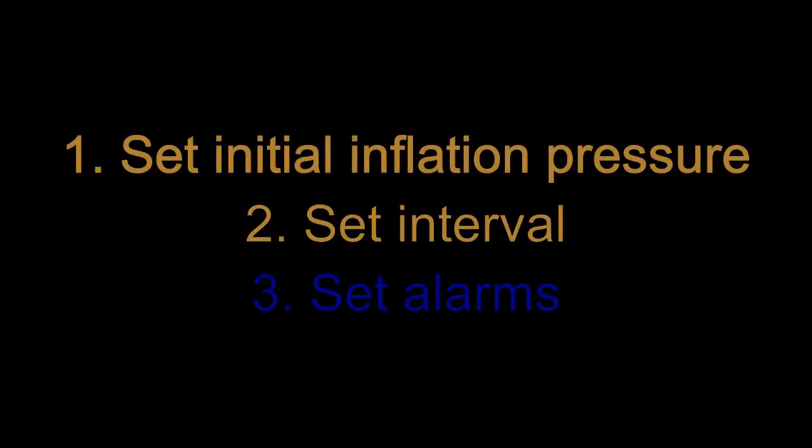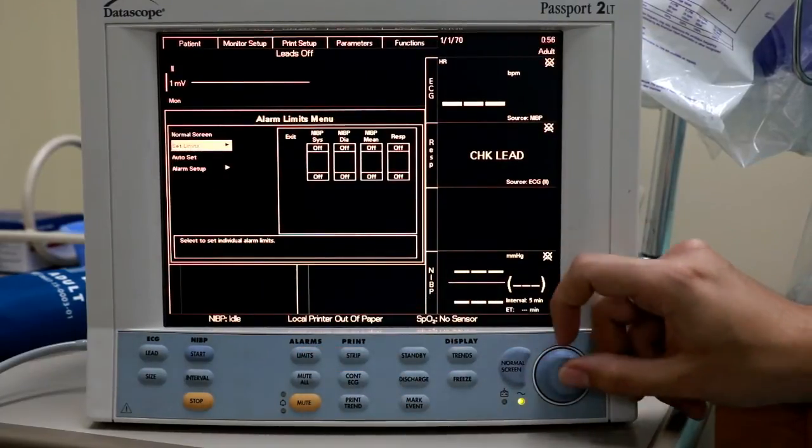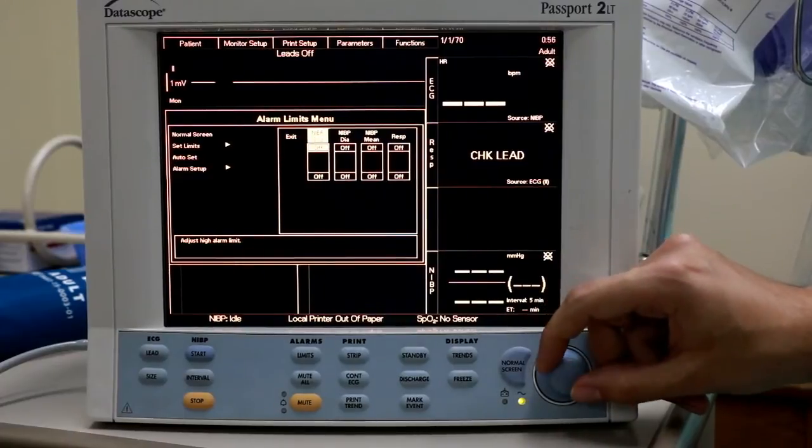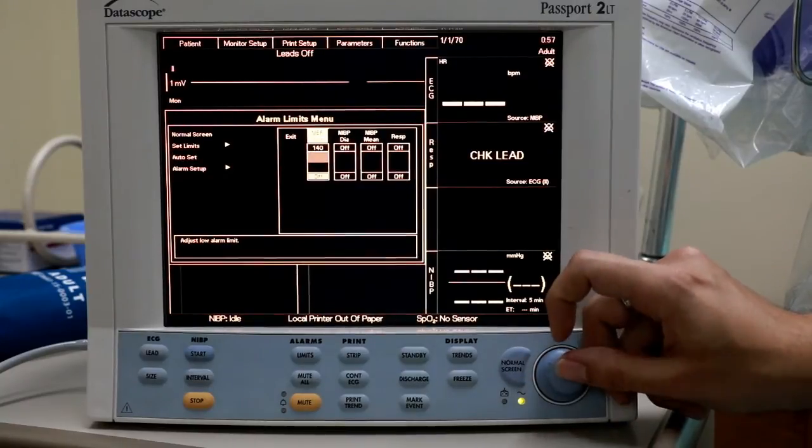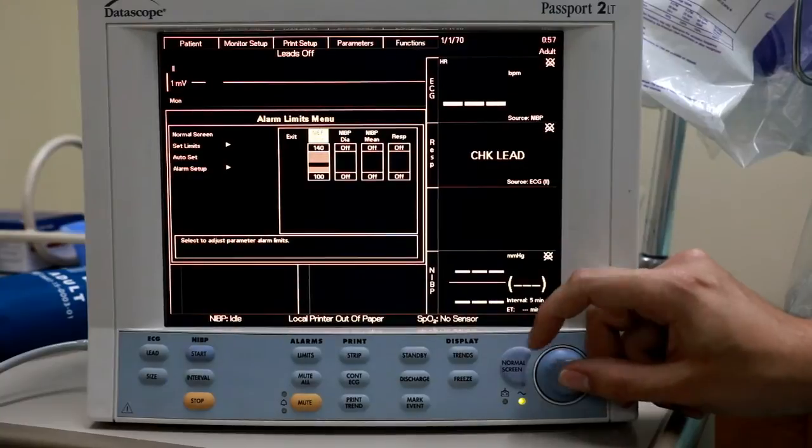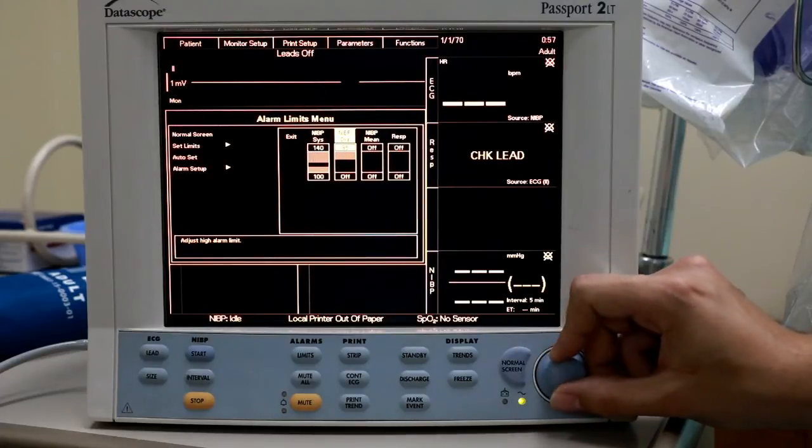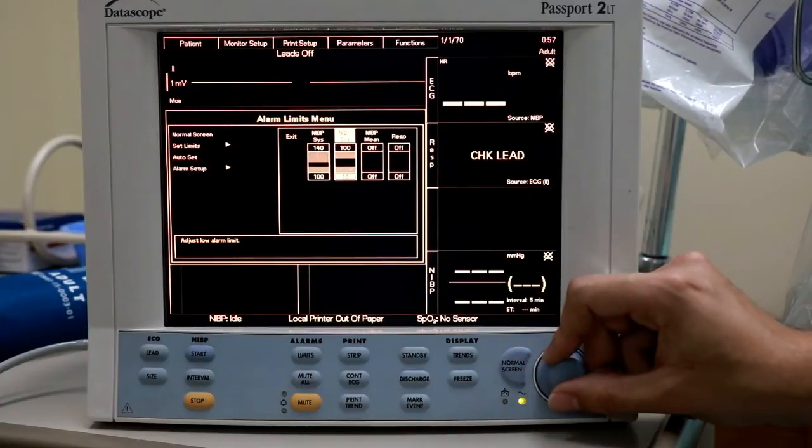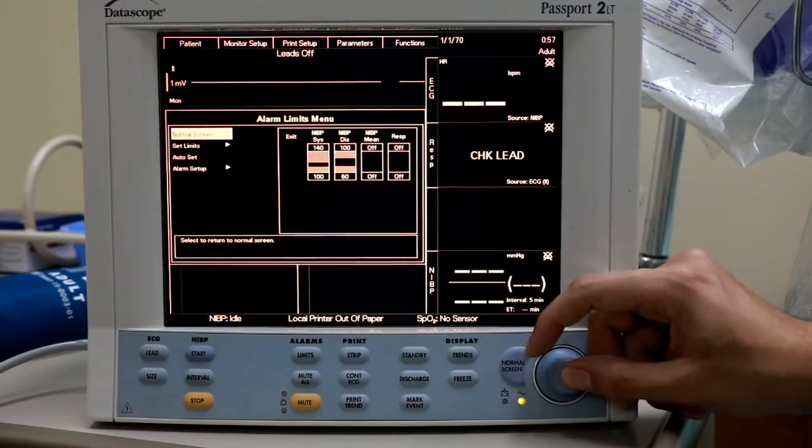Setting alarms on a machine may be necessary to check if a patient is exhibiting hypertension or hypotension. In order to set an alarm, press the Limits button under the Alarms category. From here, press Set Alarms and use the knob to set an upper and lower limit for both the systolic and diastolic pressure. If a patient's blood pressure is out of the ranges specified for systolic or diastolic pressure, an alarm will sound.